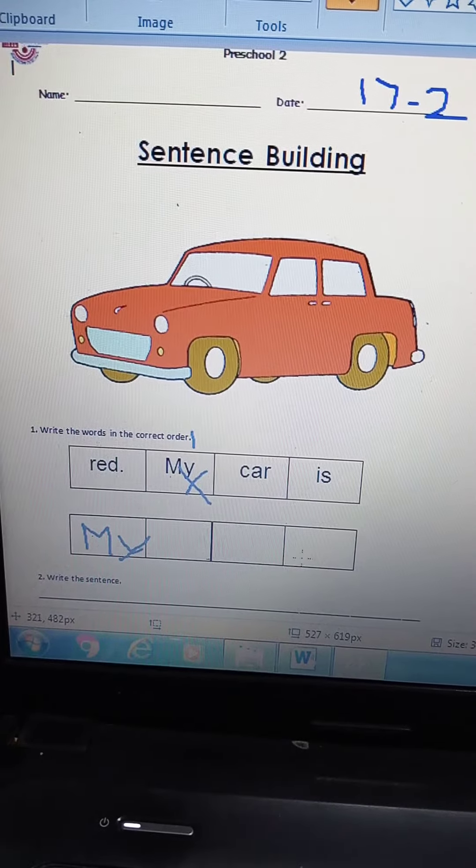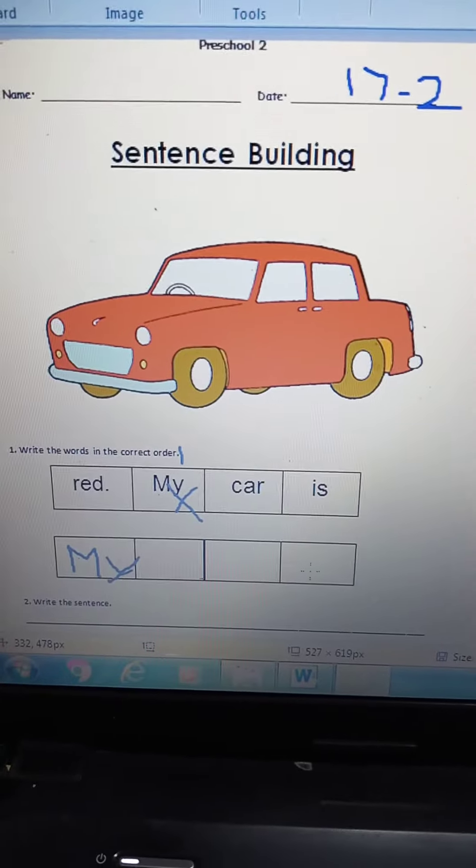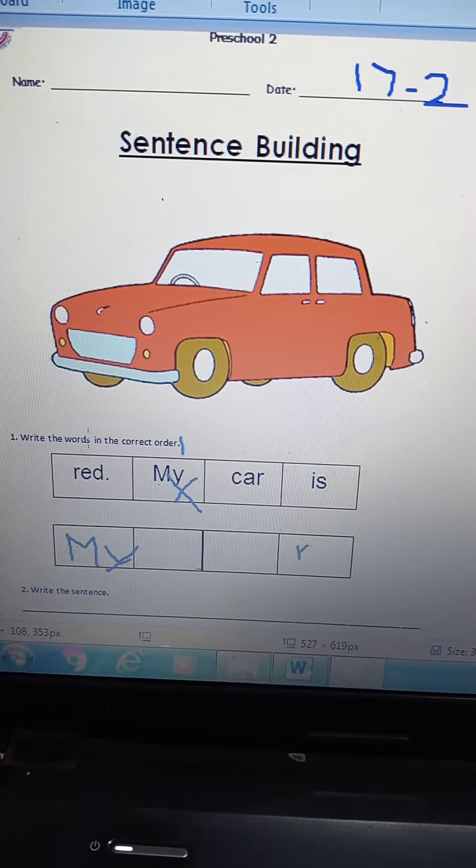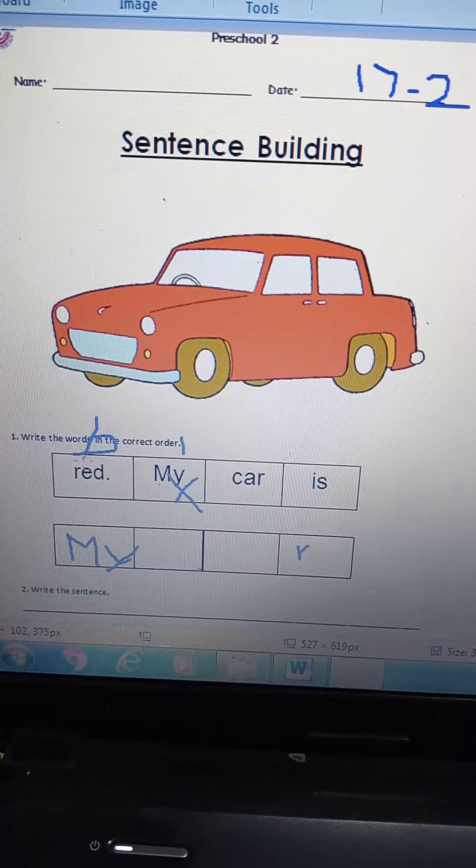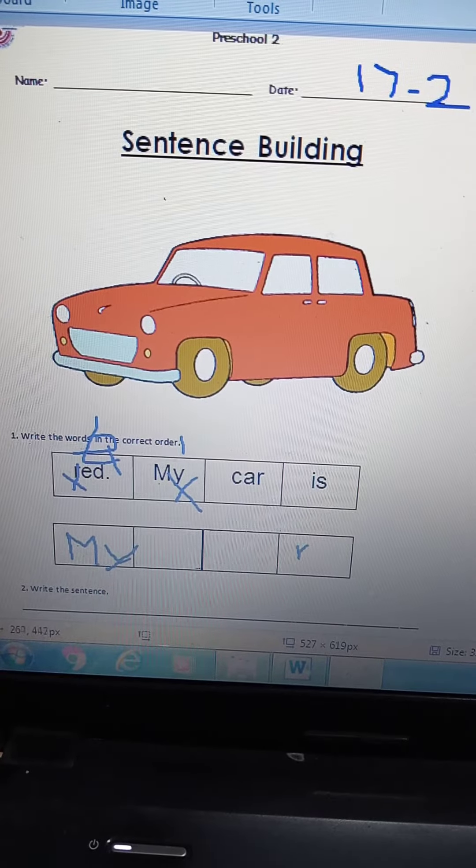And the last one in the sentence is the one with the full stop. So it is red. So I come here and write four, and I cross it out.